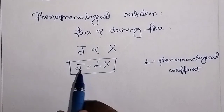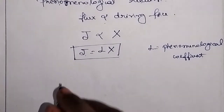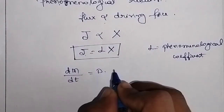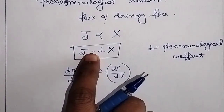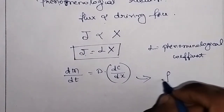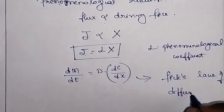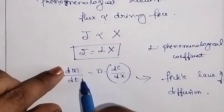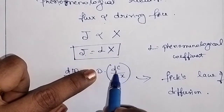One example of this phenomenological relation is: dM/dt = D · (dC/dx). This equation is called Fick's law of diffusion. Here, dM/dt represents J, the coefficient D represents L, and dC/dx represents X, the driving force.